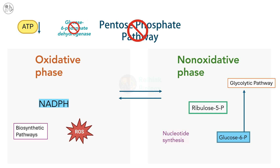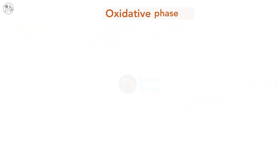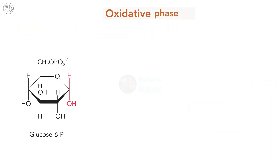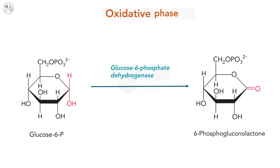The oxidative phase of the pentose phosphate pathway includes three enzymatic reactions. The first reaction is catalyzed by the enzyme glucose 6-phosphate dehydrogenase. This irreversible reaction represents the commitment step in the pathway because the product, 6-phosphogluconolactone, has no other metabolic fate. The oxidation of glucose 6-phosphate by glucose 6-phosphate dehydrogenase is coupled to the reduction of NADP+, resulting in the formation of one molecule of NADPH.